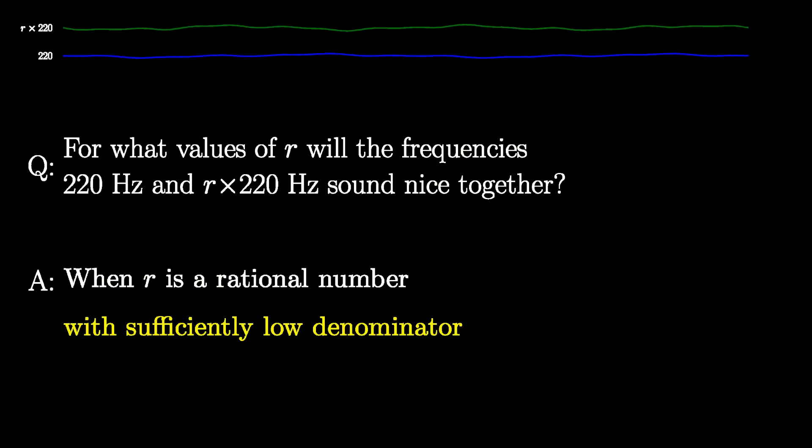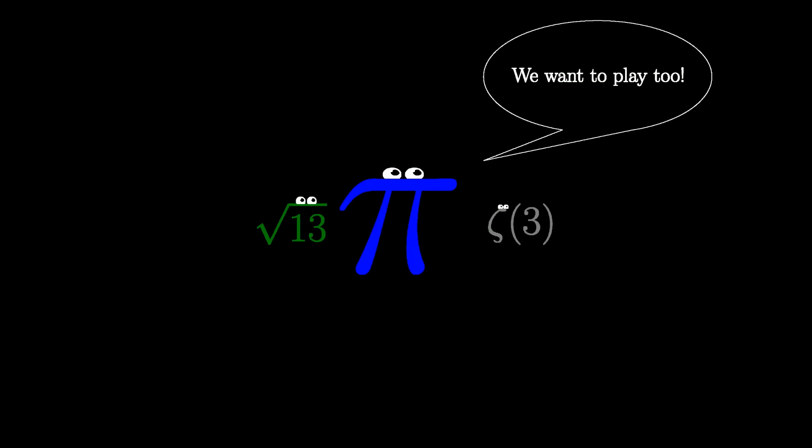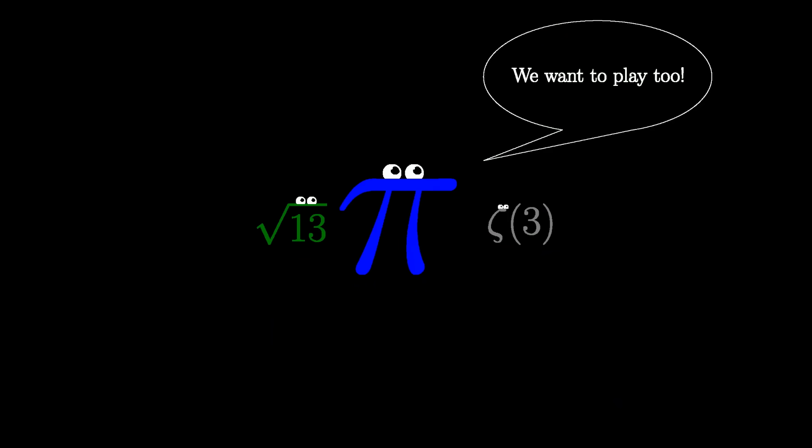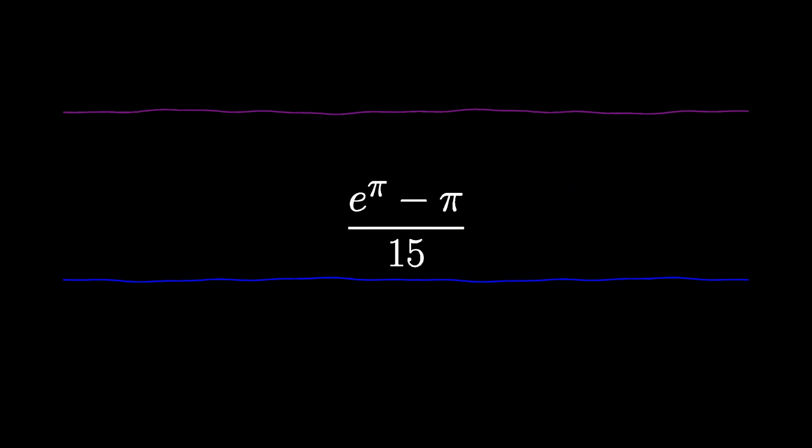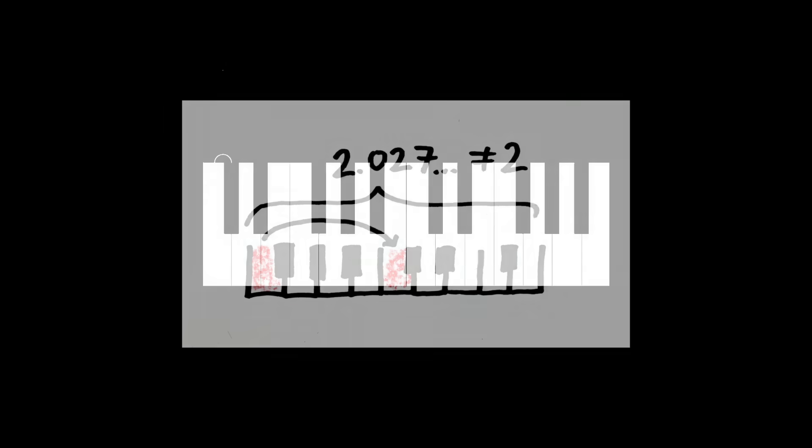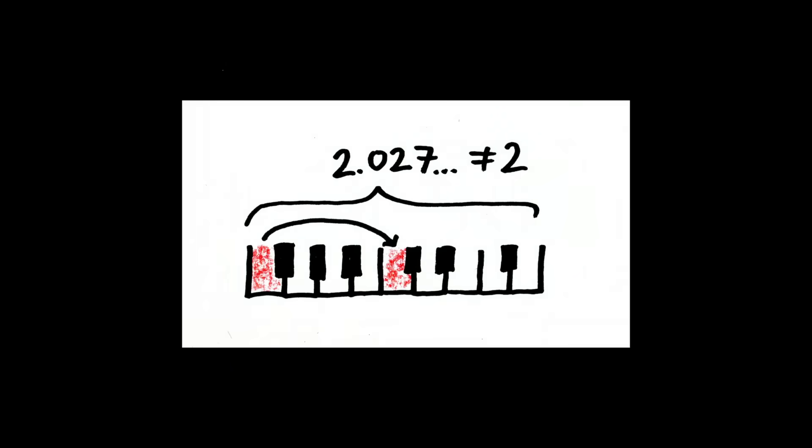Even still, this doesn't quite capture harmoniousness, since plenty of notes sound good together even when the ratio of their frequencies is irrational, so long as it's close to a harmonious rational number. And it's a good thing too, because many instruments, such as pianos, are not tuned in terms of rational intervals, but are tuned such that each half-step increase corresponds with multiplying the original frequency by the 12th root of 2, which is irrational. If you're curious about why this is done, Henry at MinutePhysics recently did a video that gives a very nice explanation.